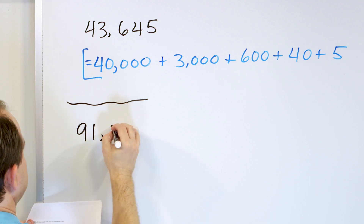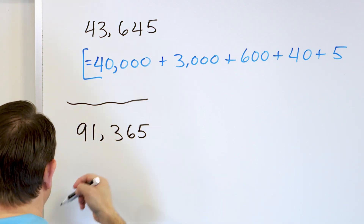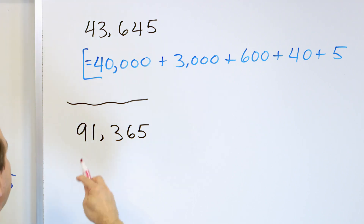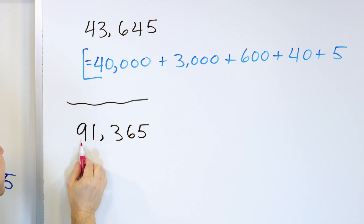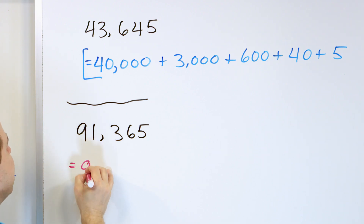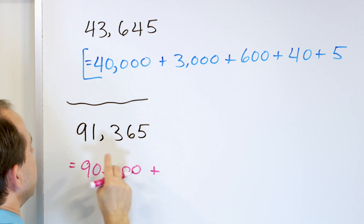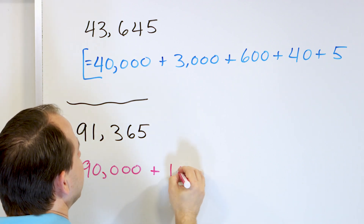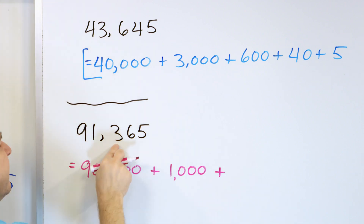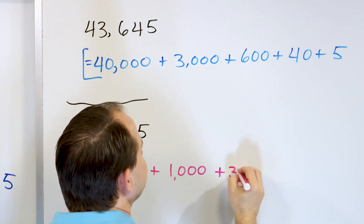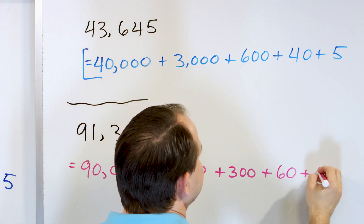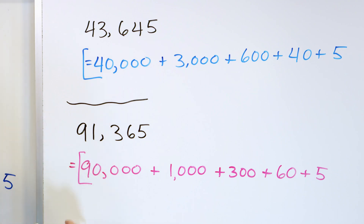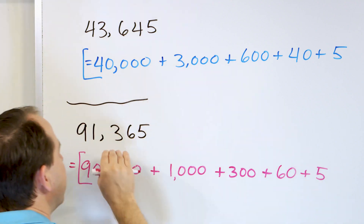Let's take 91,365. After you do enough of these, you see the pattern is very similar for all of them. What's the value of this 9? It's in the ten-thousands place — this is the thousands, this is the ten-thousands — so this is worth 90,000. The 1 is in the thousands place, so it's only worth 1,000. The 3 is in the hundreds place, so it's really worth 300. The 6 is in the tens place, so it's really worth 60. And the 5 is just worth 5. So we have 90,000 plus 1,000 plus 300 plus 60 plus 5.